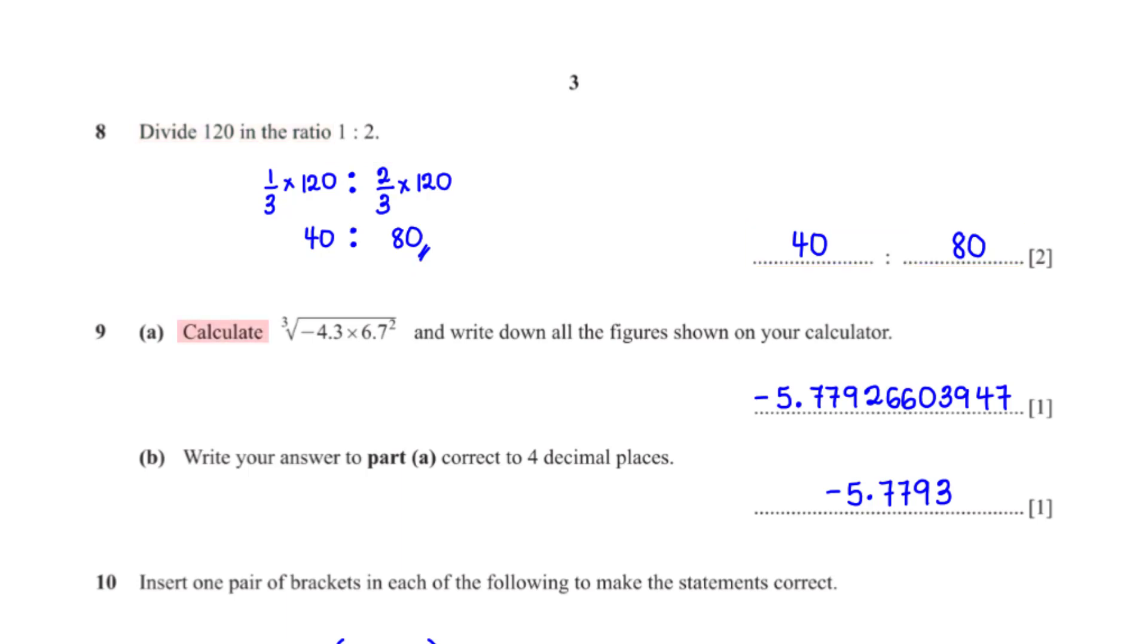Calculate cube root of negative 4.3 times 6.7 squared, and write down all the figures shown on your calculator. When we type the given expression into the calculator, this is what we get.